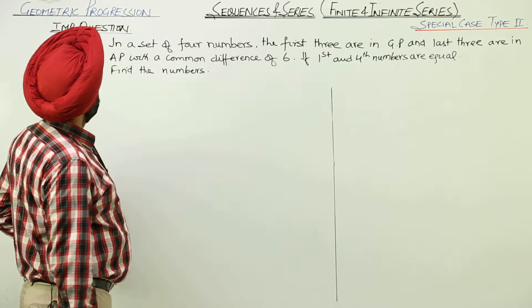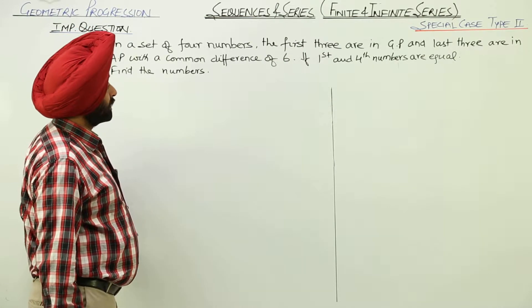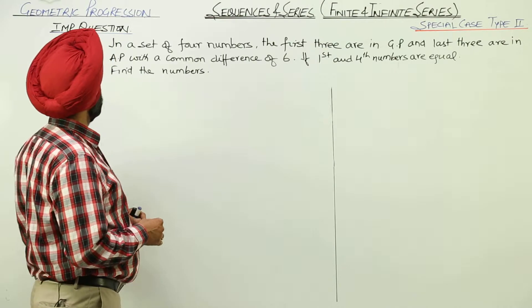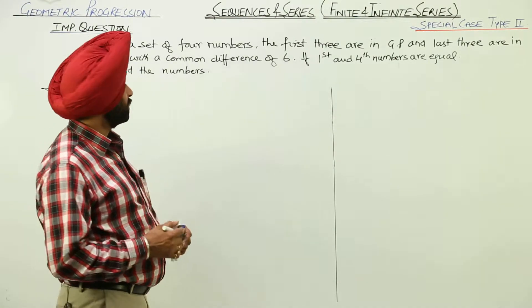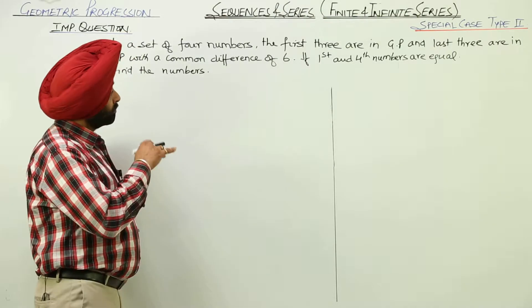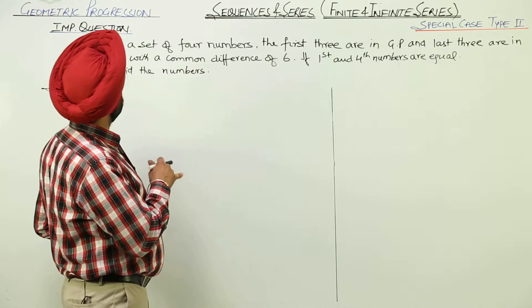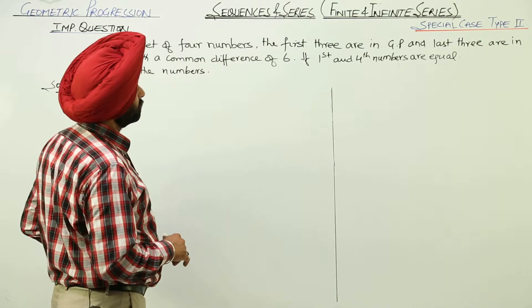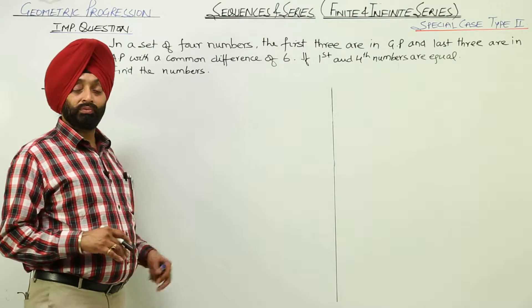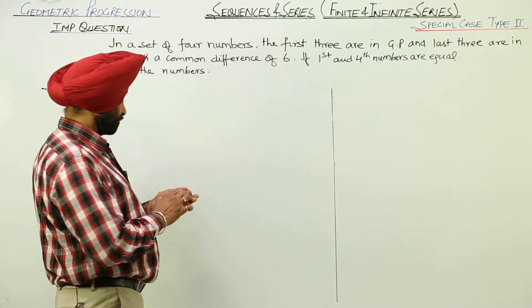Now next question. In a set of 4 numbers, the first 3 are in GP and the last 3 are in AP. Again, combination for GP and AP numbers. And for the AP series, last 3 numbers they are having common difference 6. If 1st and 4th numbers are equal, we have to find all the 4 numbers.